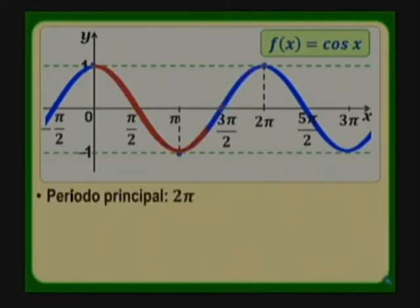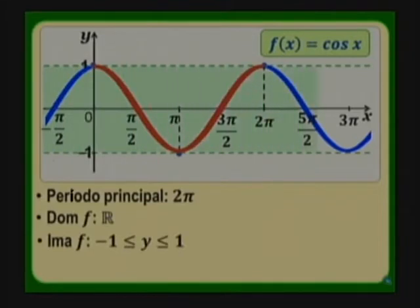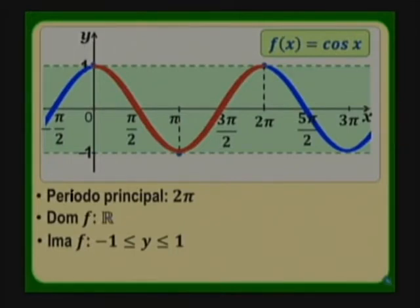El dominio de la función coseno es x perteneciente a los reales; x puede tomar cualquier valor real. La imagen de la función son los valores de y que están entre menos 1 y 1, incluyendo esos extremos, que serían el valor máximo y el valor mínimo de esta función.